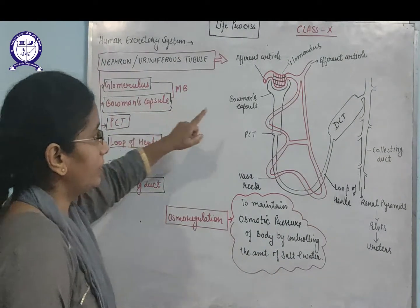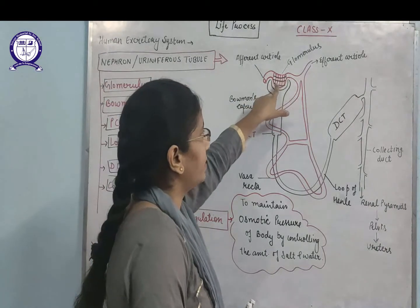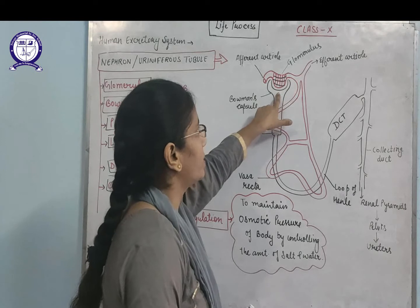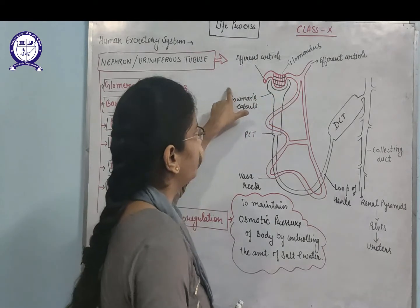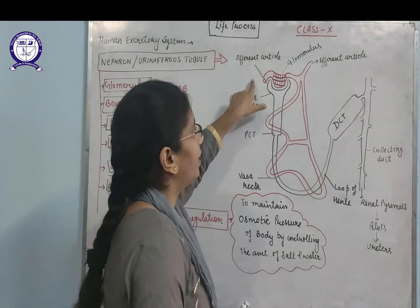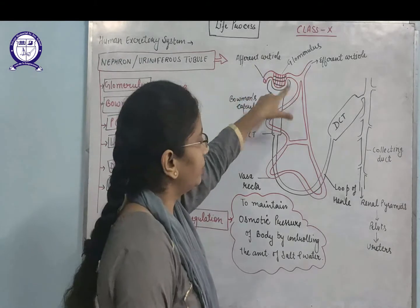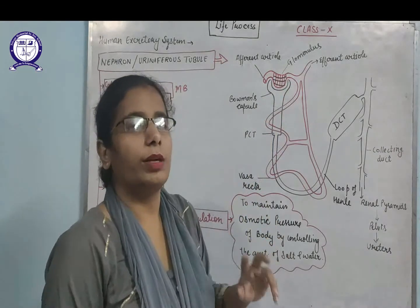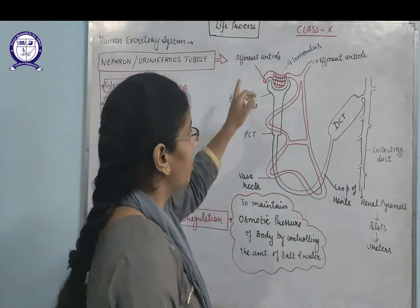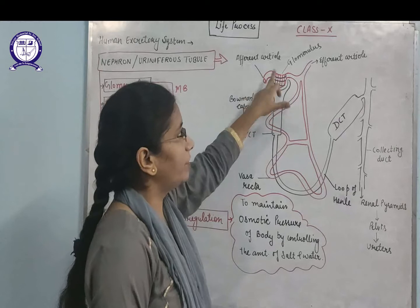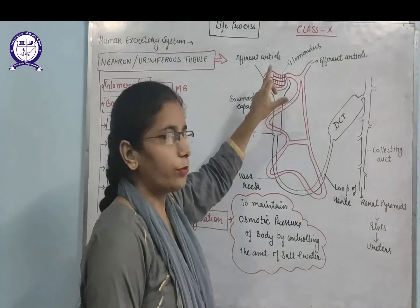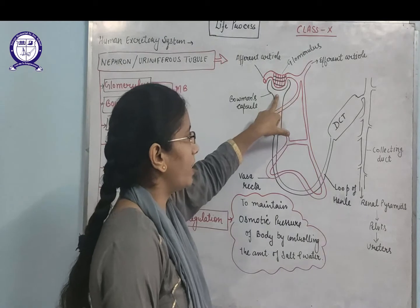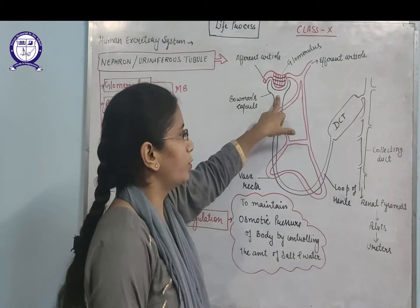In this nephron, the red part is known as the glomerulus, and this part is known as the Bowman's capsule. Blood enters with the help of the afferent arteriole into the nephron, where ultrafiltration of the blood takes place in the glomerulus. Blood enters, passes to the glomerulus where it is filtered, and the waste passes into the Bowman's capsule.